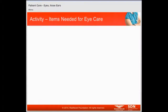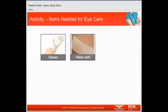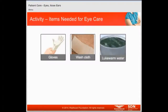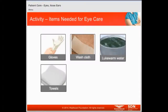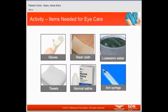The items needed for eye care are gloves, washcloth or cotton strips, lukewarm water, towels, normal saline for eye wash, and a 5 ml syringe without the needle.